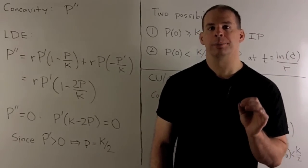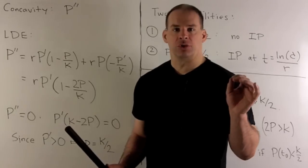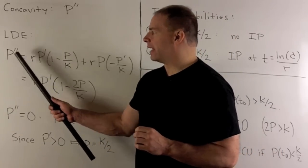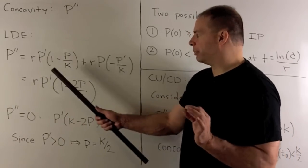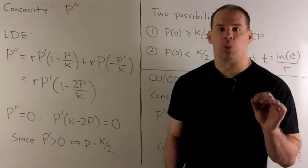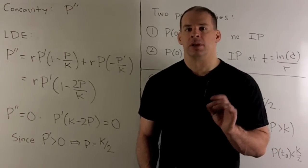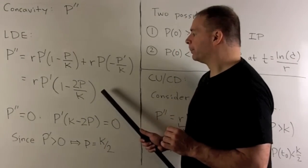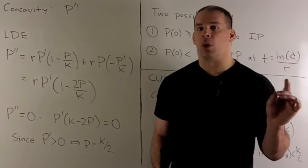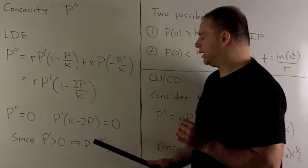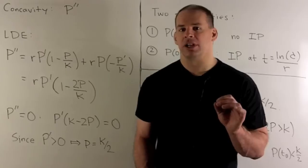Let's take a look at concavity. We take the logistic differential equation and differentiate both sides. On the left-hand side we get the second derivative; on the right-hand side we apply the product rule. When we simplify, we get R times P prime times one minus 2P over K. Setting that equal to zero for inflection points, since P prime is always positive, we're left with P equal to K over 2.